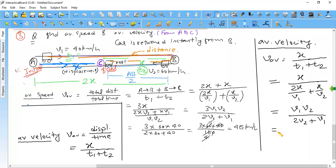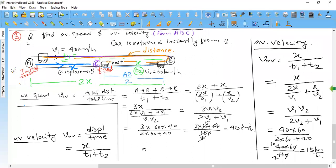Now V1 value was 40, then 60, then 2 into 60 plus 40. Final answer tell me, how much is average velocity? 60 into 40 divided by 120, so 4 times 15. So 15 km per hour. Did you understand? 15 km per hour.